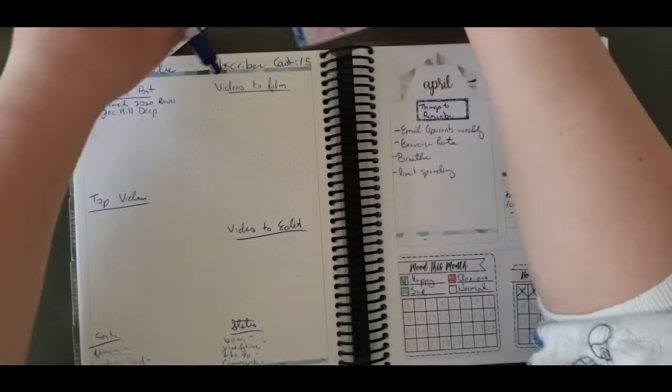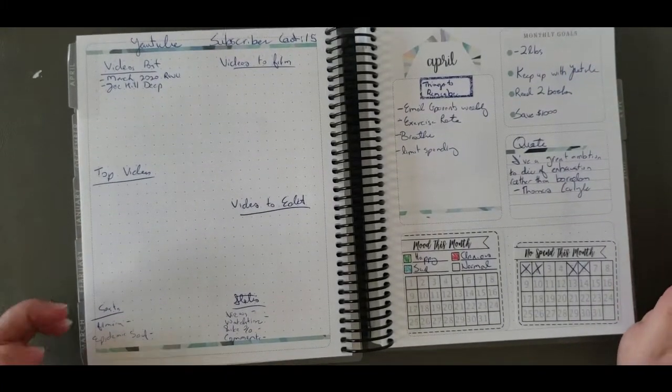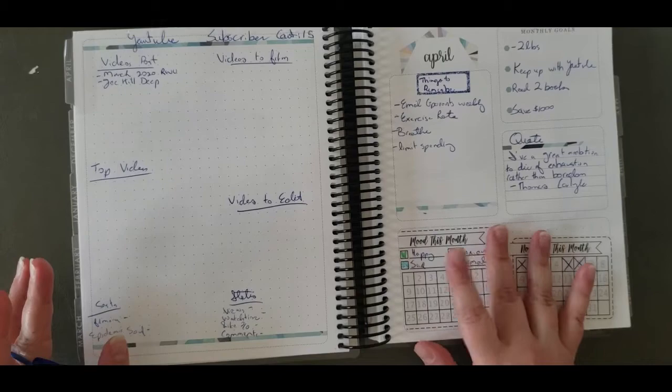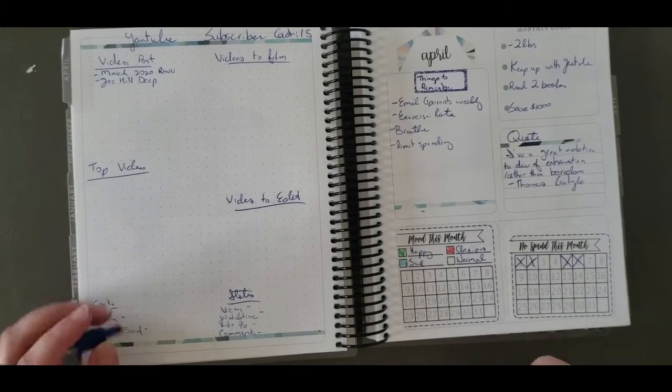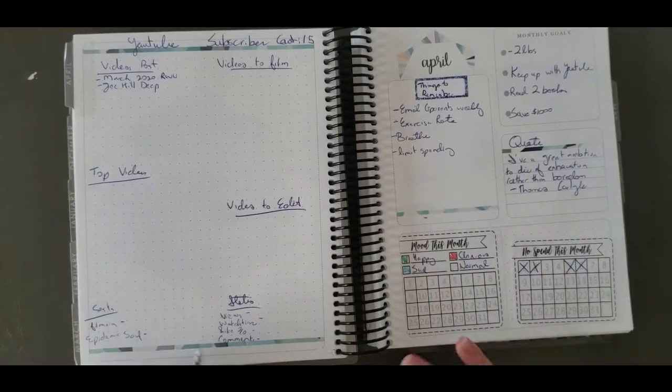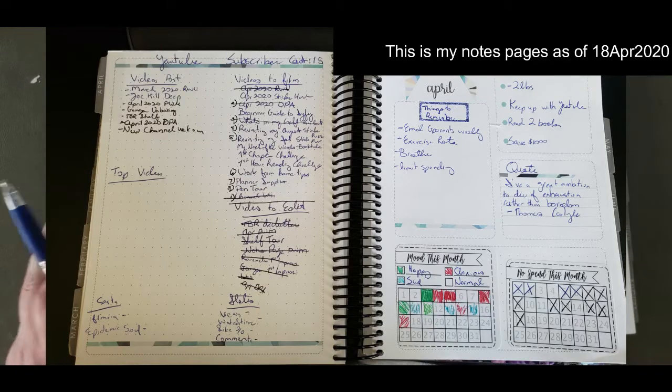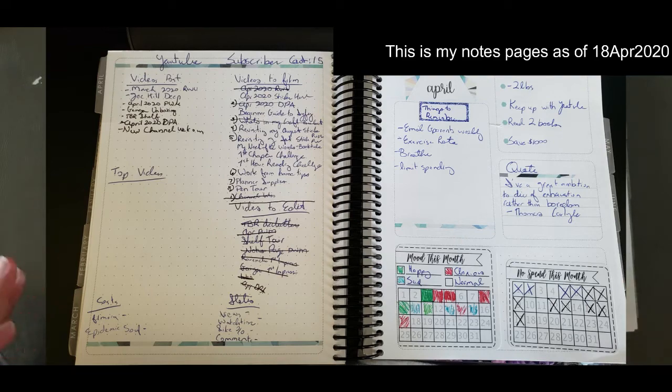So that is what my notes spread looks like. It's fairly simple. It's fairly straightforward. It doesn't use a whole lot of stickers. And I will include a picture, possibly at the end of the month, about what this looks like when I'm done. Or when I'm editing, I will show you a picture of what this looks like with more stuff written in. So you can get an idea of how it's used throughout the month.